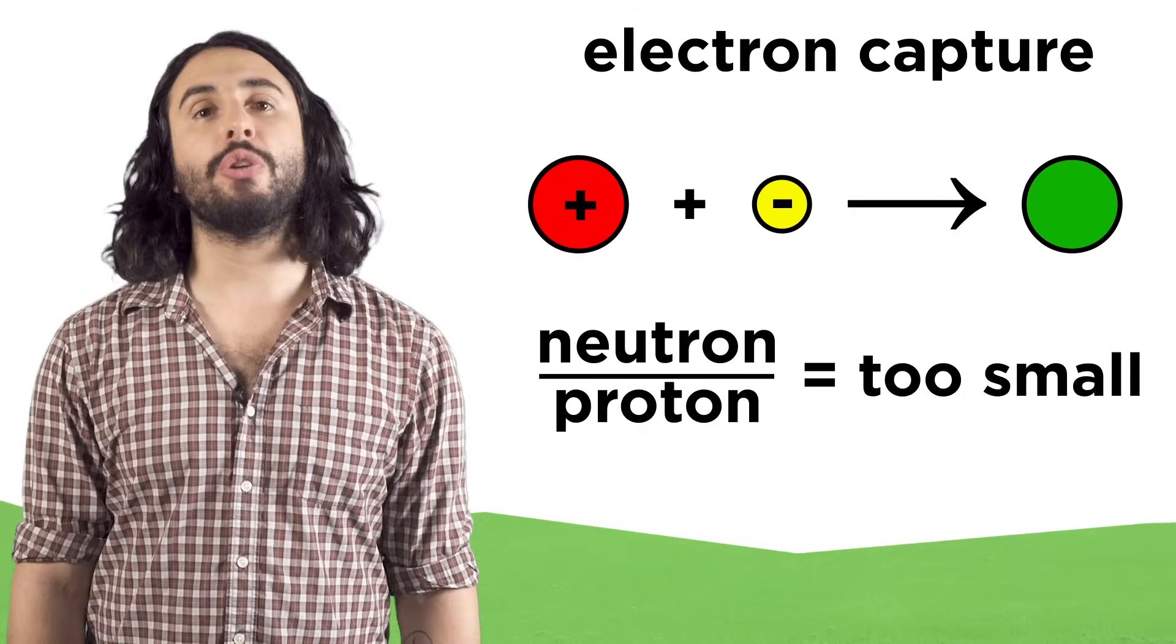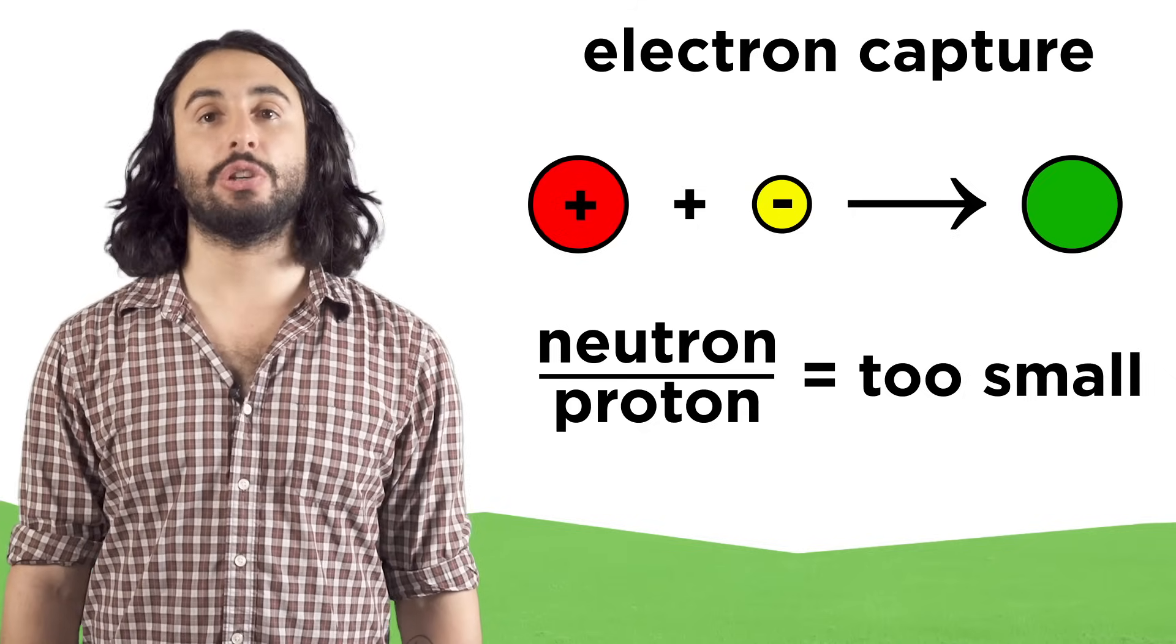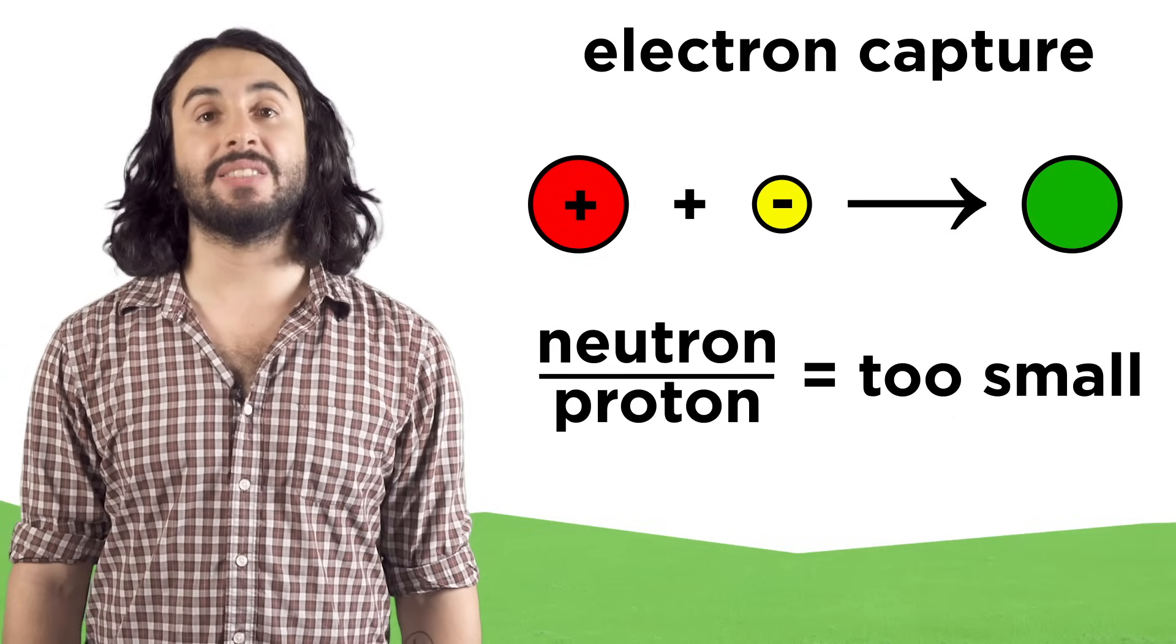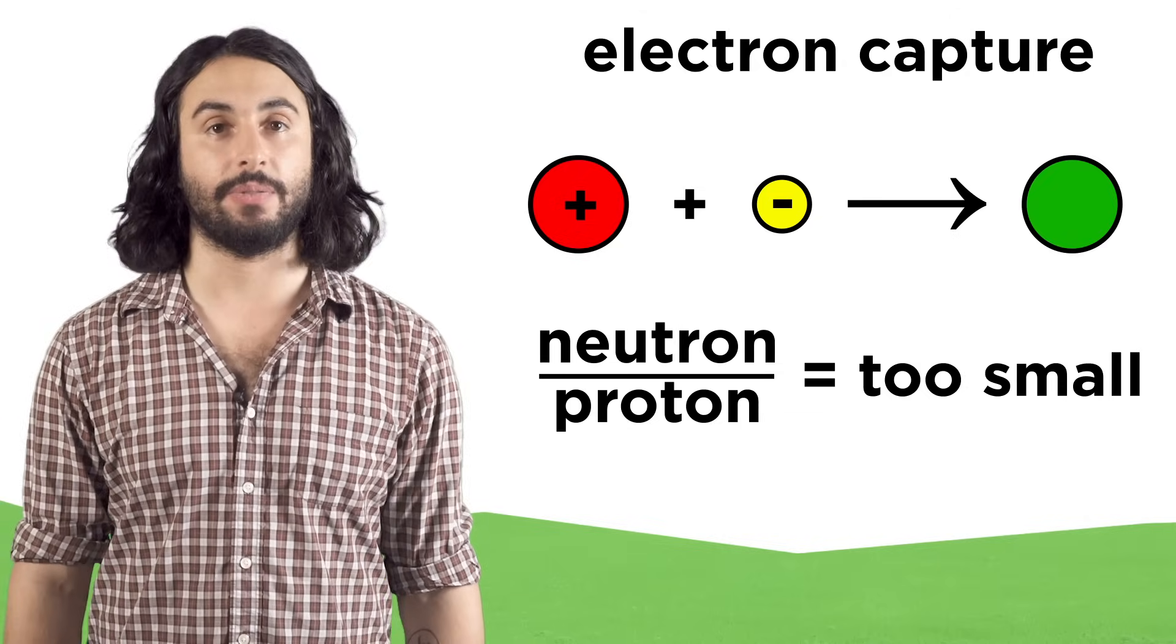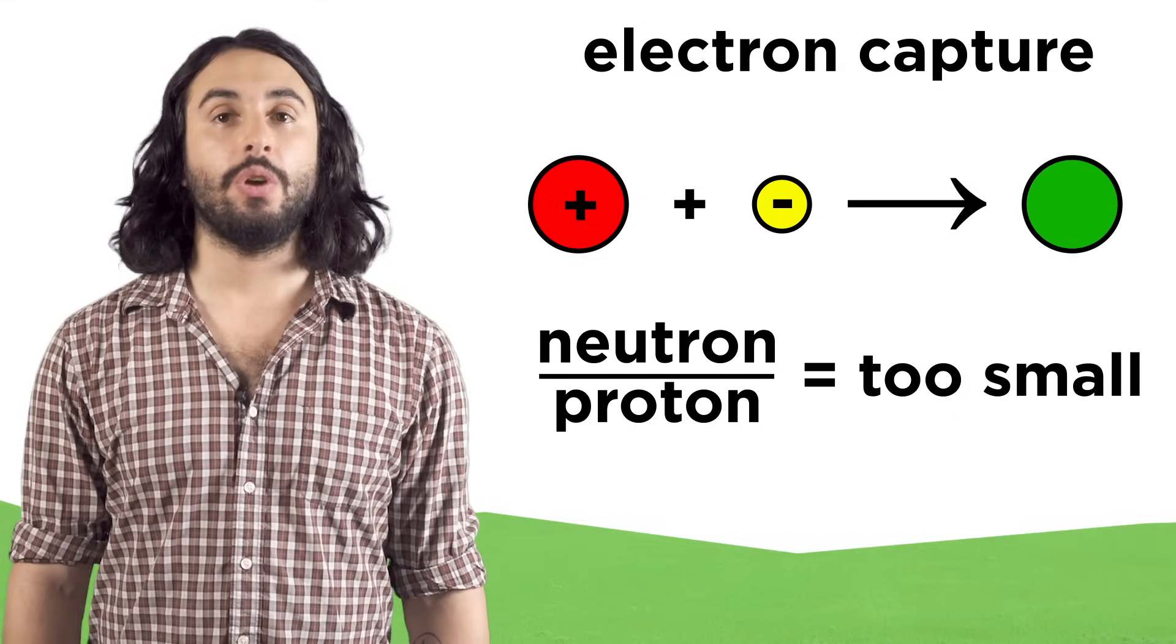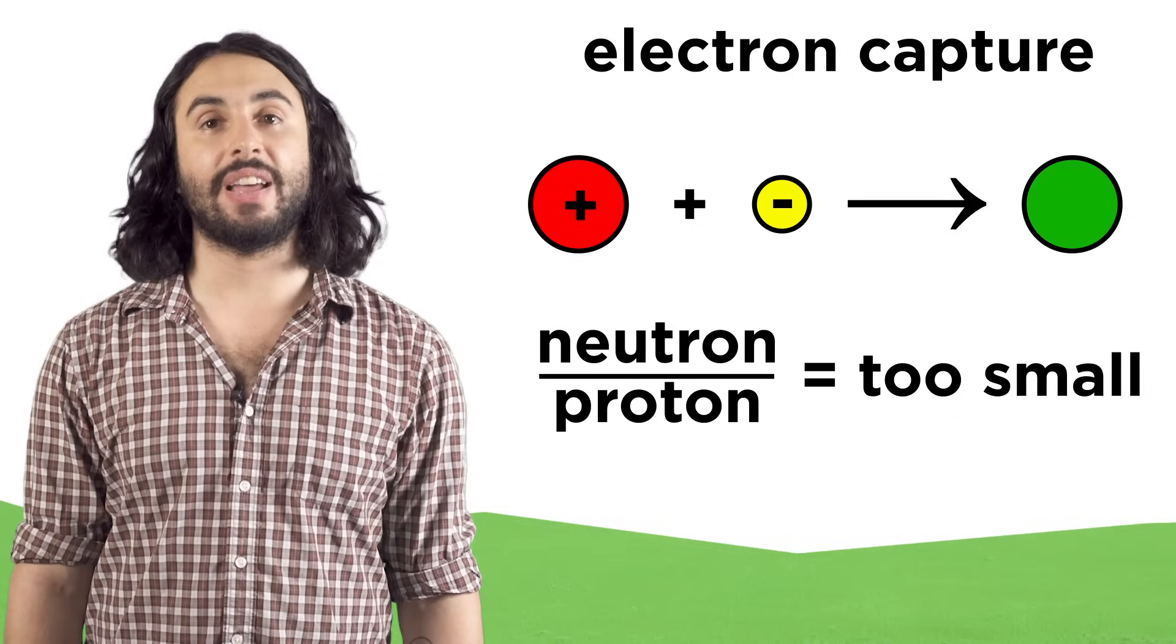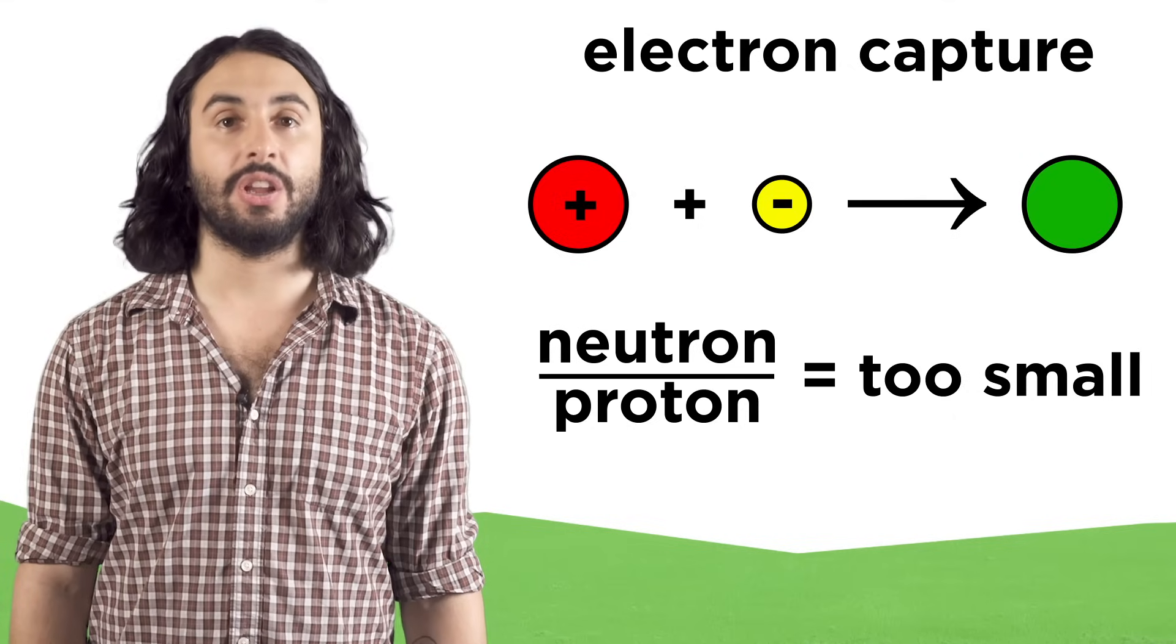Another process that can occur is electron capture. This is similar to positron emission in that a proton becomes a neutron, but it does so by absorbing an electron rather than emitting a positron. Once again, a proton plus an electron makes a neutron. The electron in question will tend to come from one of the inner orbitals of the atom, and the electron will be a reactant since it is absorbed by the proton to give a new particle.